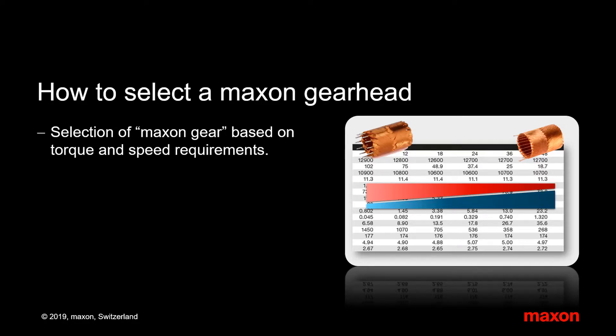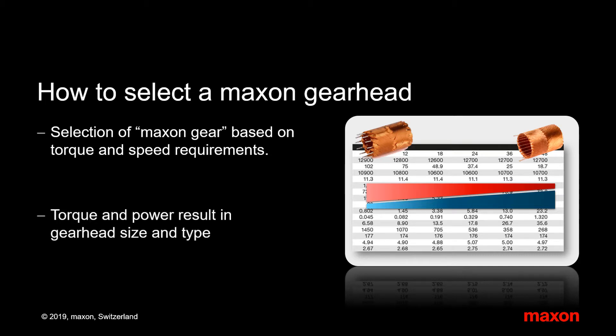That's it — a short introduction to gearhead selection. In summary: first select the gearhead size and type according to the torque requirements of your application. The matching reduction ratio is found by looking at the load speed and the maximum gearhead input speed.